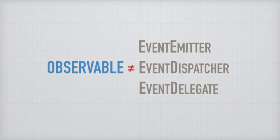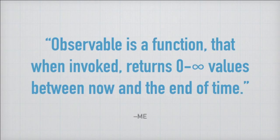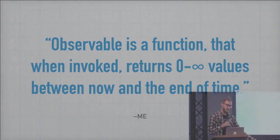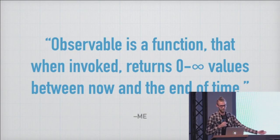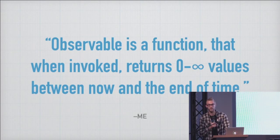If observables aren't event emitters, event dispatchers, or event delegates — what are they? They are functions. Here's my real definition for observable, the one I tell people when I want to freak them out: an observable is a function that, when invoked, returns zero to infinity values between now and the end of time. Which I think is a pretty accurate answer.